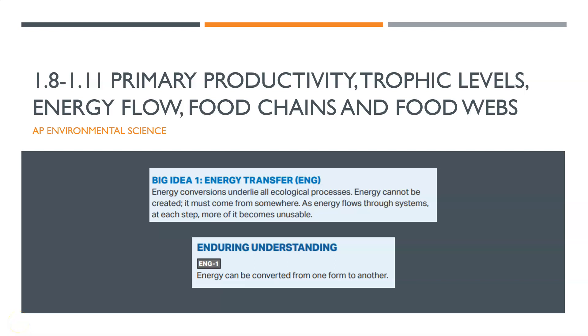Now we're going to put all the things we've learned about in the previous lessons together and talk about primary productivity, trophic levels, energy flow, food chains, and food webs.